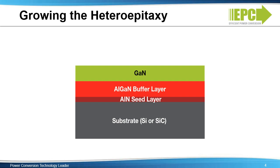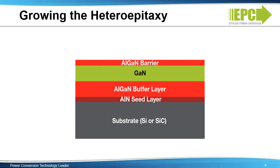Finally, the thin AL-GAN barrier is grown on top of the GAN crystal to create a thin strain layer that induces the formation of a two-dimensional electron gas.